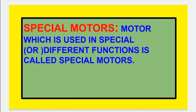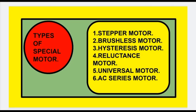Next are special motors. A motor which is used in special or different functions is called a special motor. For example, when high torque with AC is required, special motors are used. Basically, special motors are divided into the following types.